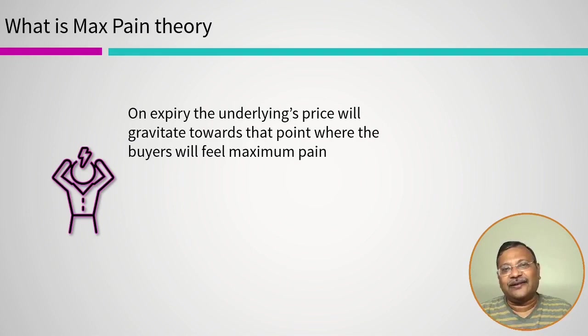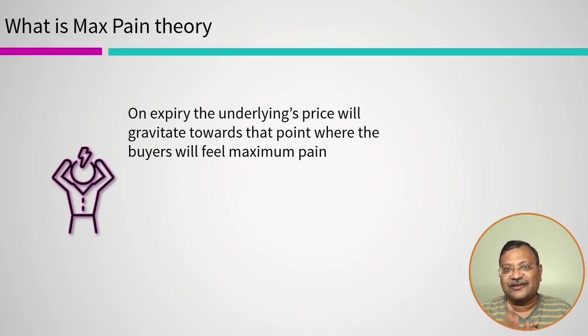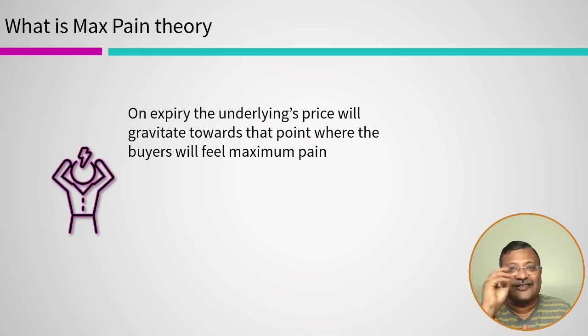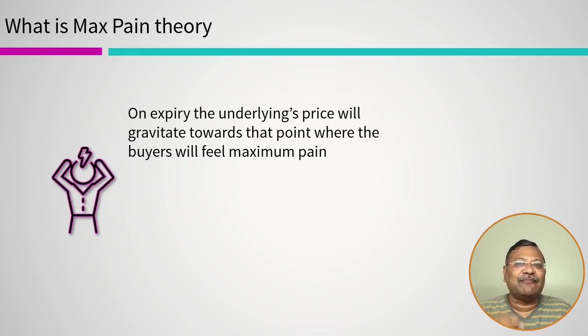When will a buyer incur the maximum losses? The maximum loss a buyer can incur is the premium paid, meaning the maximum loss is incurred when the option dies worthless or its value becomes zero. On expiry, an option's value becomes zero if it expires at the money or out of the money. If it expires in the money, its value equals the intrinsic value; at or out of the money, there is no intrinsic value and no time value either.